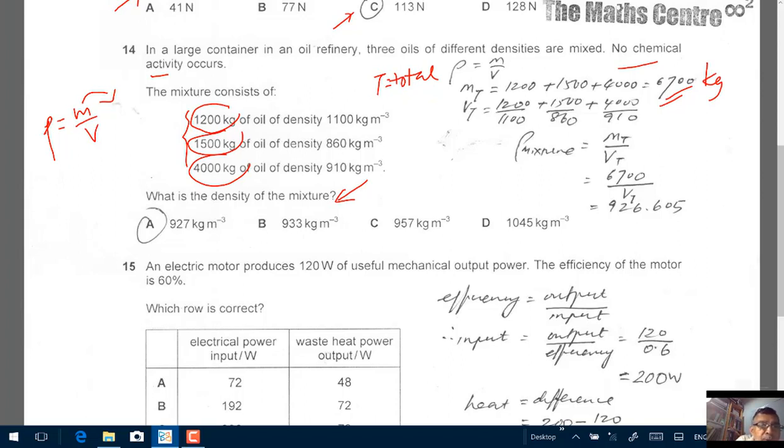Now because density is mass over volume, volume will be mass over density. Let me say that again. Density is mass over volume, so your volume will be mass over density. Now I need my total volume now, will be V1 plus V2 plus V3. What is V1? V1 will be 1200 divided by 1100, mass over density. And then V2 will be 1500 divided by 860. And V3, this will be 4000 divided by what's the density? 910. So add these numbers up, use a calculator, add these numbers up, use a calculator, and that goes into our denominator.